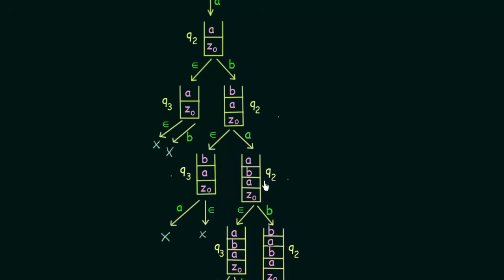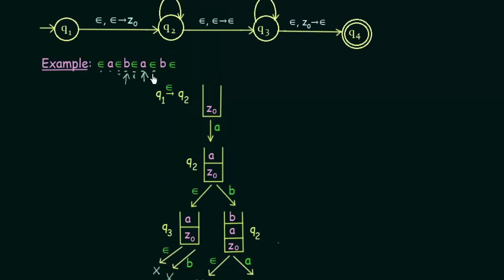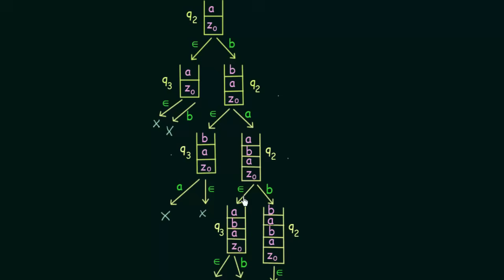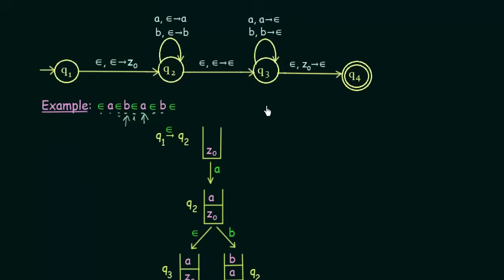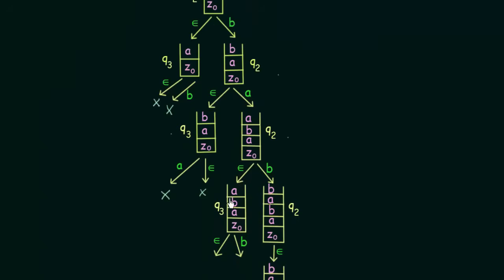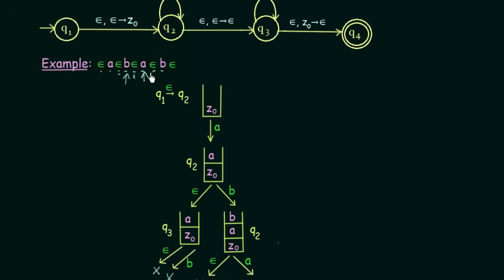Now we see what options we have after reading this 'a'. We have two options: either read epsilon or read 'b'. In state q2 if you read epsilon, you go to state q3 without changing anything on the stack. So we move to state q3 and the stack remains the same. Now we have two options remaining: read 'b' or read this epsilon.